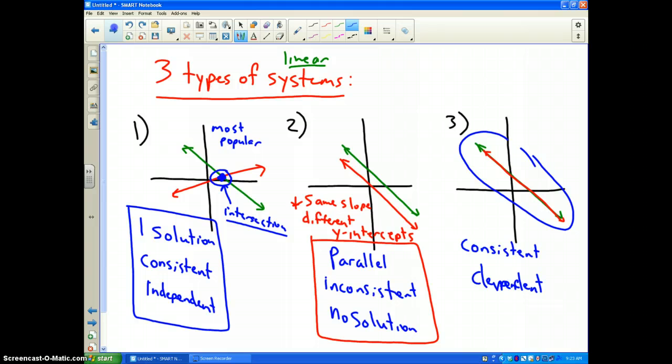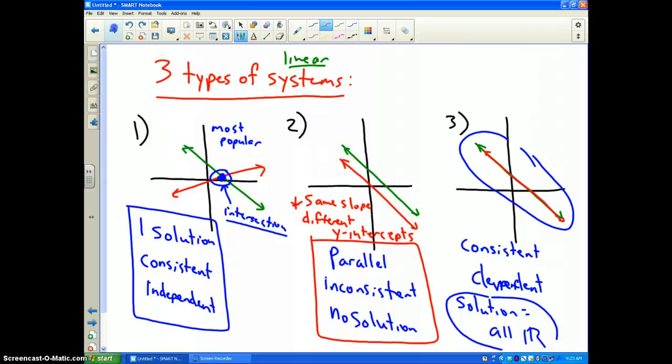The reason it is called consistent and dependent is because the solution to the problem is equal to all real numbers. All real numbers make the system of equations true. And how can you tell? Because in this particular situation, the two lines will have the same slope, but they will also have the same y-intercept.